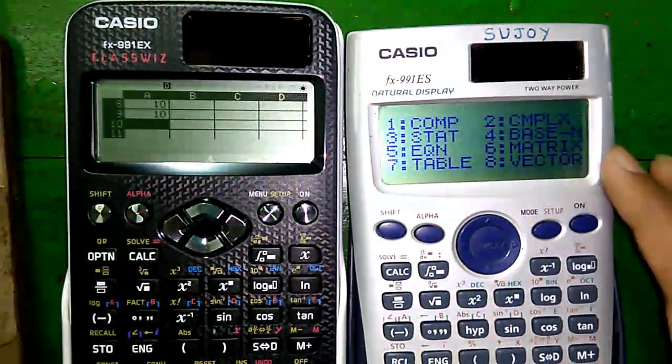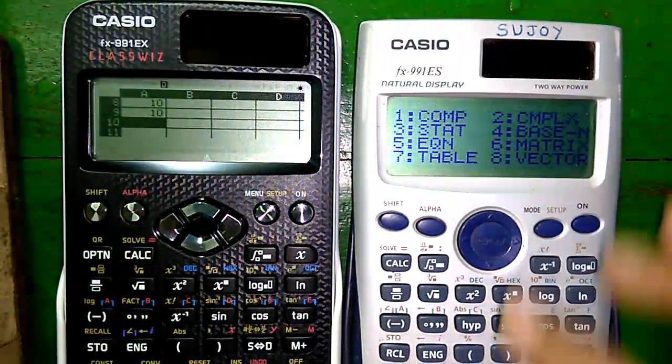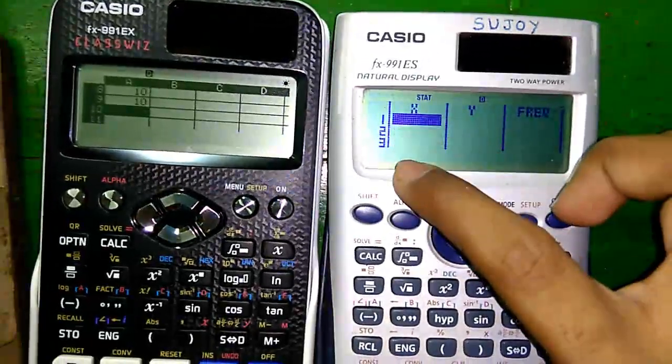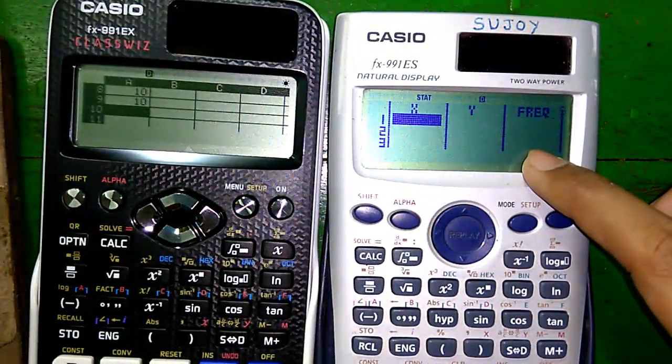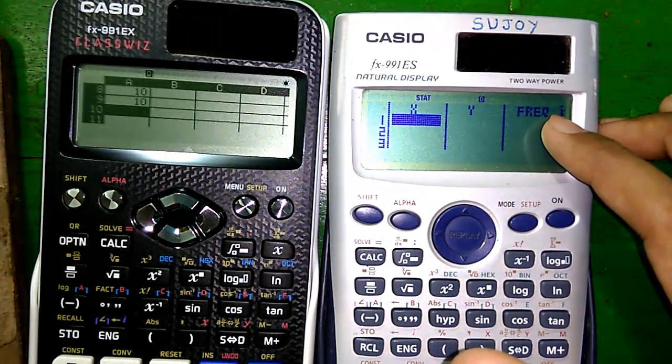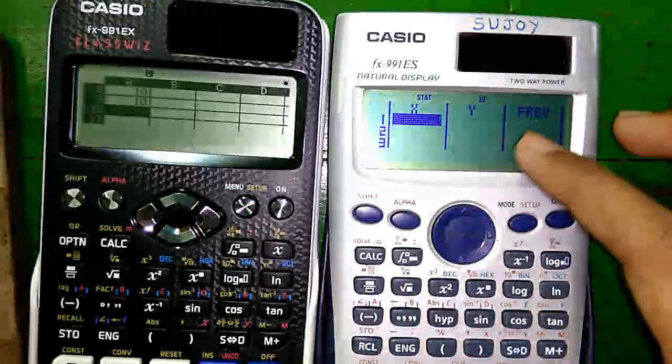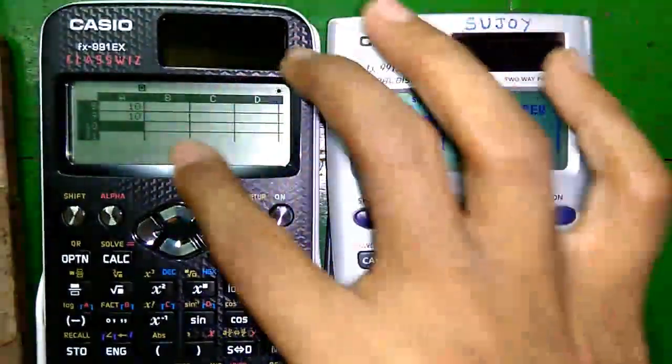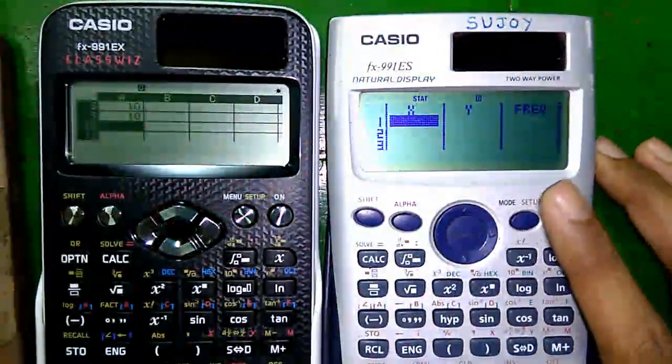Here you can also get a spreadsheet-like feature in the stat mode. And if you choose 2 variables, you can get 2 variables X and Y and the 3rd column which basically contains the frequency of the values. But here, you have more cells to accommodate more values and it also supports many more features in the spreadsheet mode.